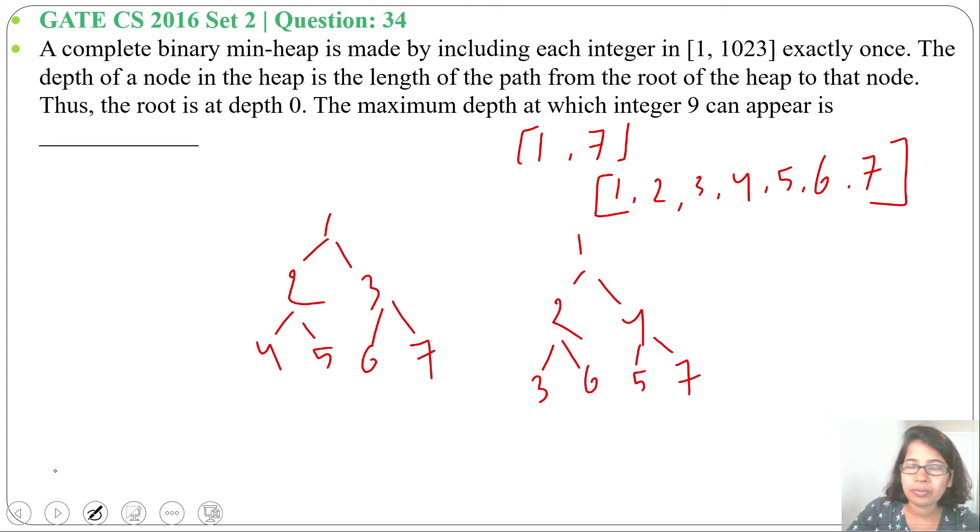Suppose we want to find maximum depth of integer 3. Here integer 3 is present at depth 1, and in this min-heap, integer 3 is present at depth 2. This is depth 1, this is depth 2. So 3 can be present maximum at depth 2.